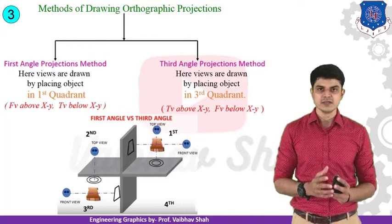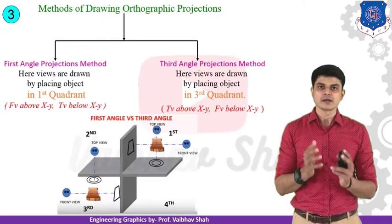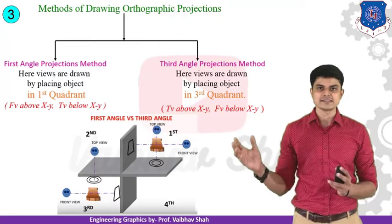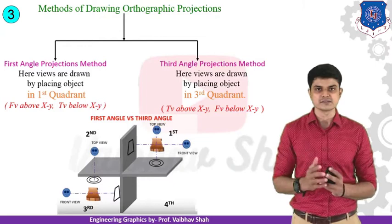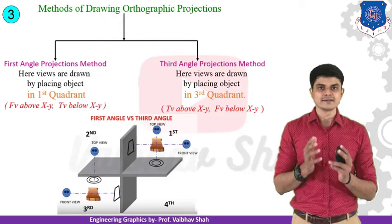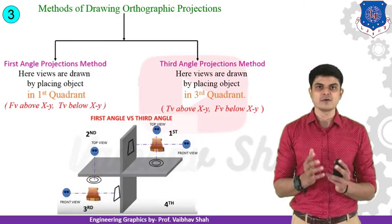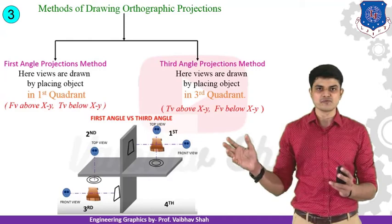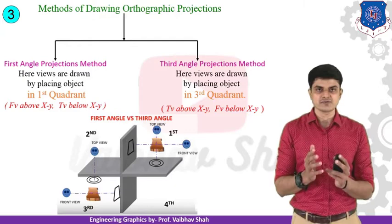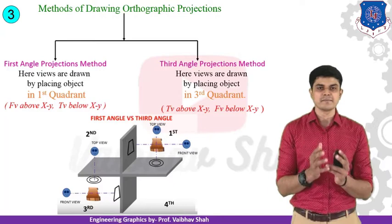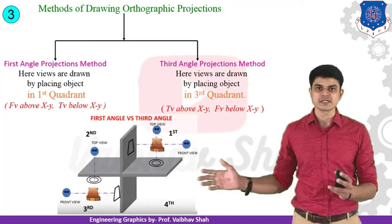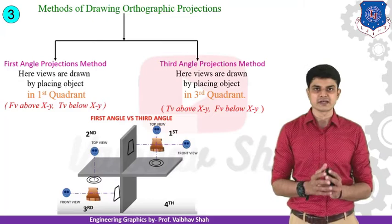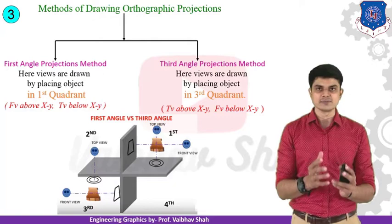Let us understand what is meant by the first angle method and the third angle method. We place the object into a quadrant system. Whenever your object is placed into the first quadrant, the system of projection is known as the first angle system. Whenever your object is placed into the third quadrant, it is known as the third angle projection system.